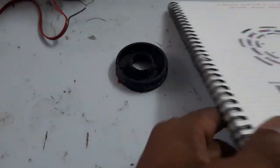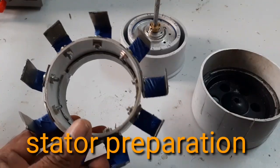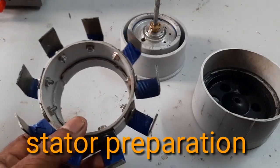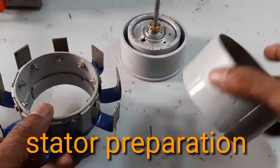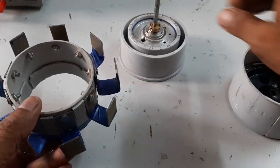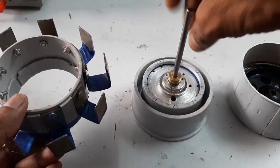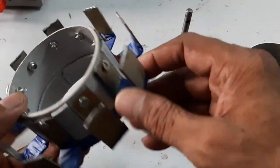This is the stator for the energy efficient motor and this is the rotor. And here, this is the shortened bearing. Look at this.